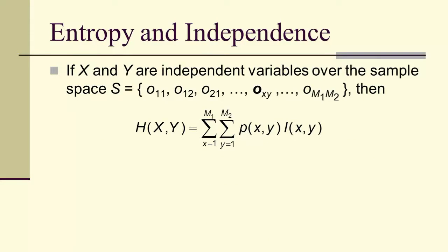Now let's look at entropy and independence. If X and Y are independent over a sample space, then the entropy is given by this double sum because we have probabilities of both X and Y outcomes indexed by x and y and information is x and y.